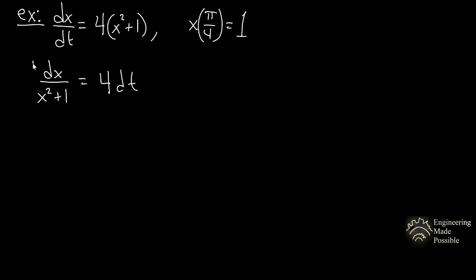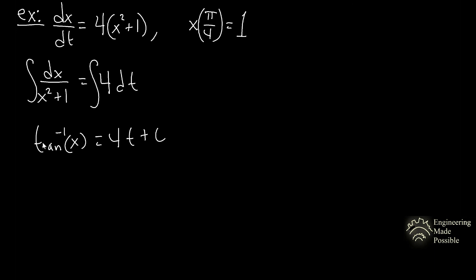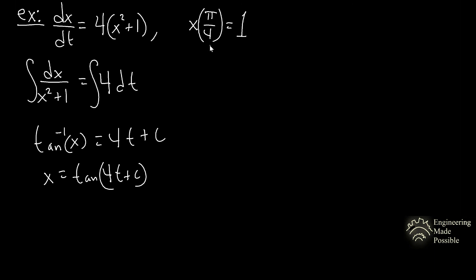Integrating both sides gives: tan⁻¹(x) equals 4t plus the arbitrary constant C. Getting x by itself, we have x equals tangent(4t + C). Now to solve for C, we use the initial condition: plug in t = π/4, knowing the function equals 1.